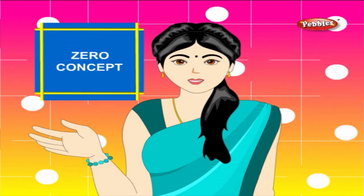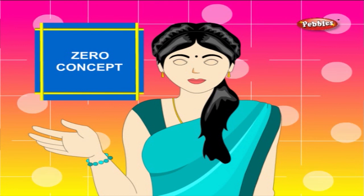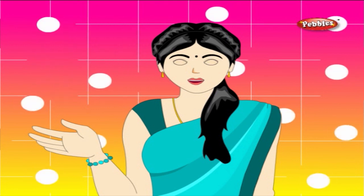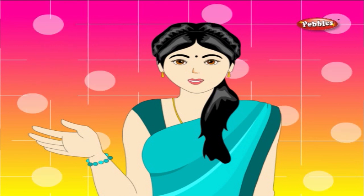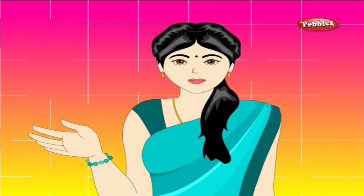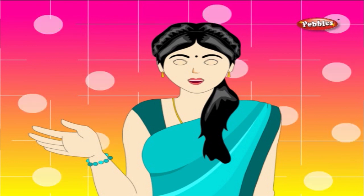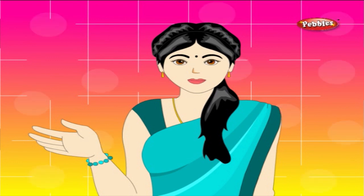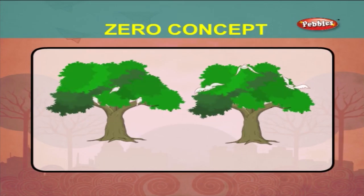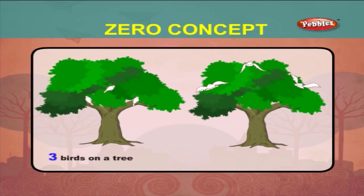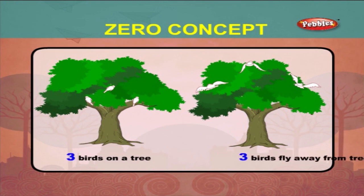Zero — zero concept. Zero means nothing. Let us see an example to understand this. There are three birds on a tree. When all the three birds fly away from the tree,